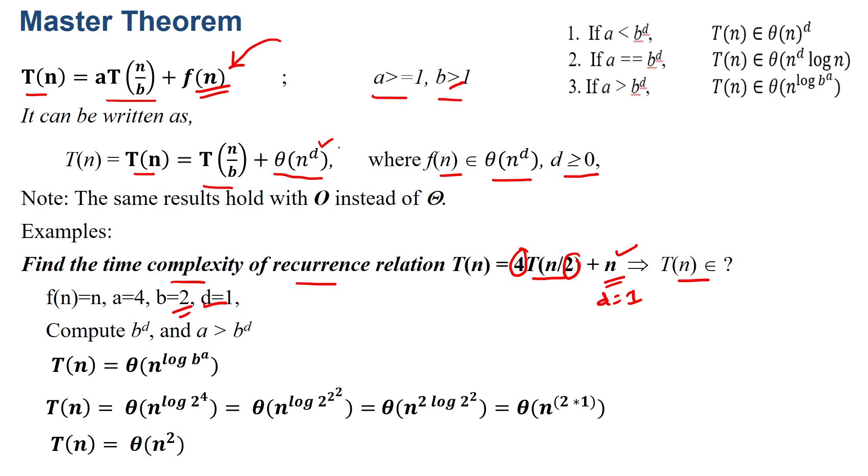Now this can be solved by using selection of these three rules. If A < B^d, time complexity is Θ(n^d). If A = B^d, then T(n) = Θ(n^d log n). If A > B^d, then time complexity is Θ(n^(log_b A)). Now we will calculate B^d.